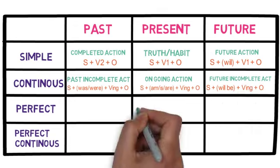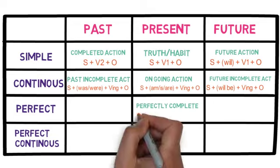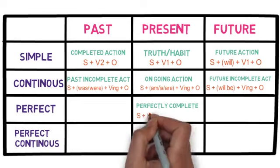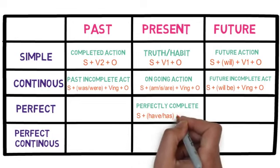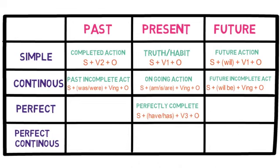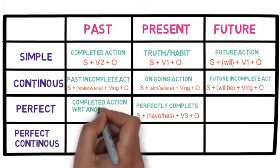In the present perfect tense, we refer to an activity that had started in the past and is still valid in the present. The sentence structure is subject plus have or has plus verb's third form plus object. In the past perfect tense, we refer to a completed action with respect to another.